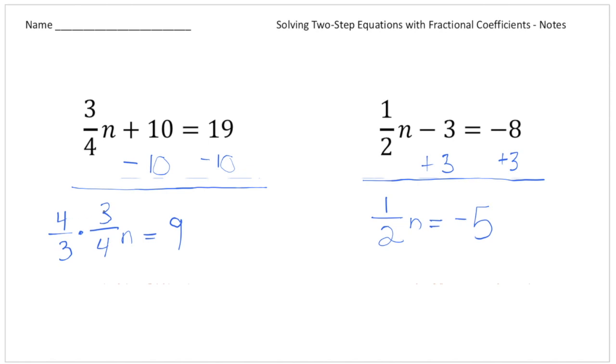Because think about this, 4 times 3 gives us 12, and 3 times 4 gives us 12. And 12 divided by 12 gives us 1. So really, these actually cancel out. And what's left is just 1 n.